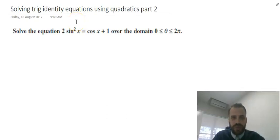Alright, second one in solving trig identity equations using quadratics. This one's slightly more complicated: 2 sin²θ = cos x + 1 over the domain 0 ≤ θ < 2π.